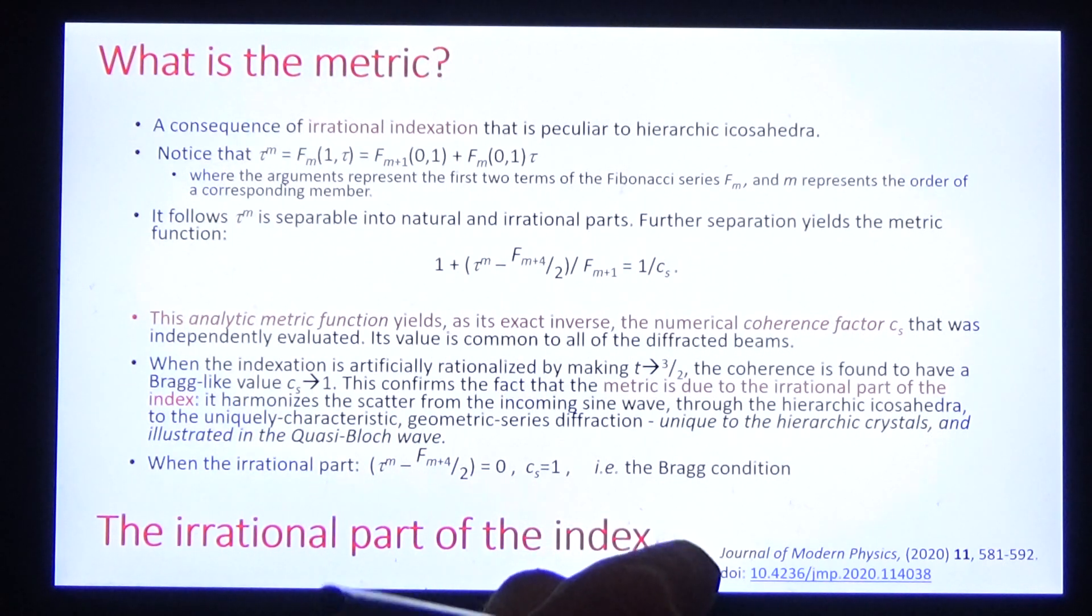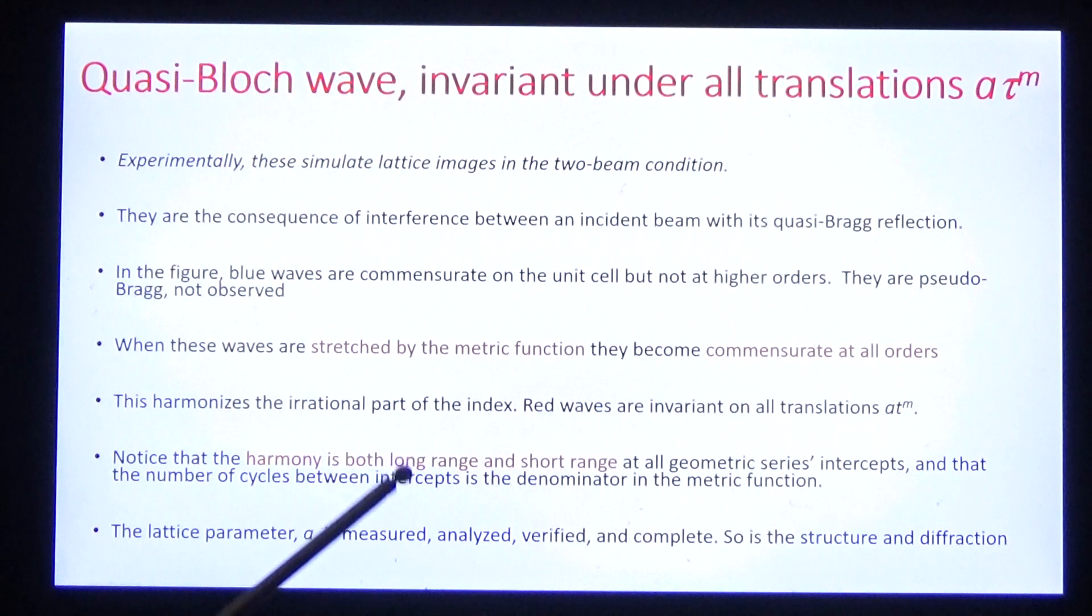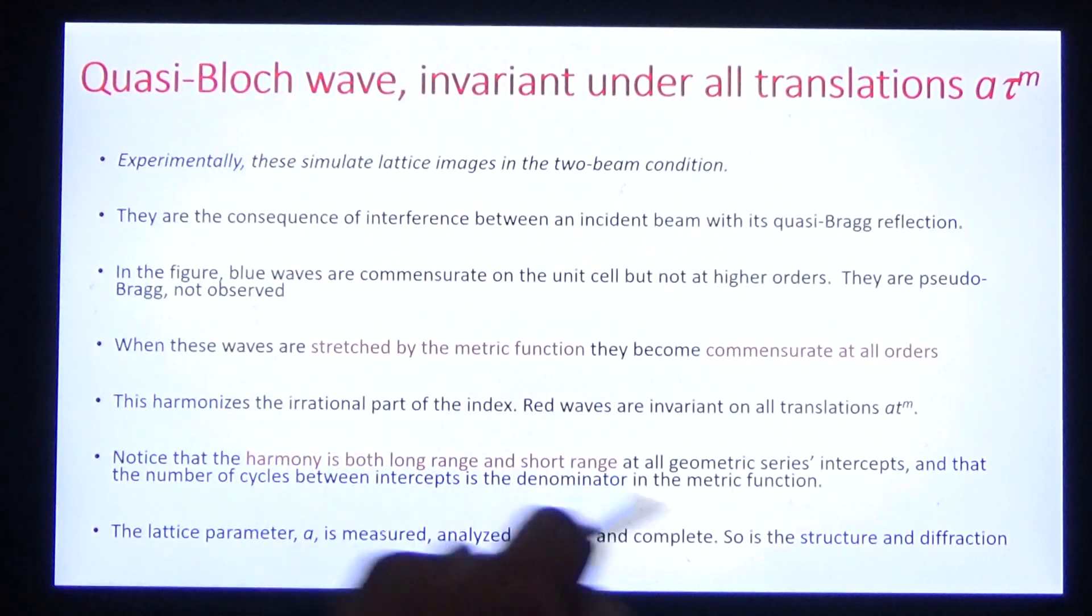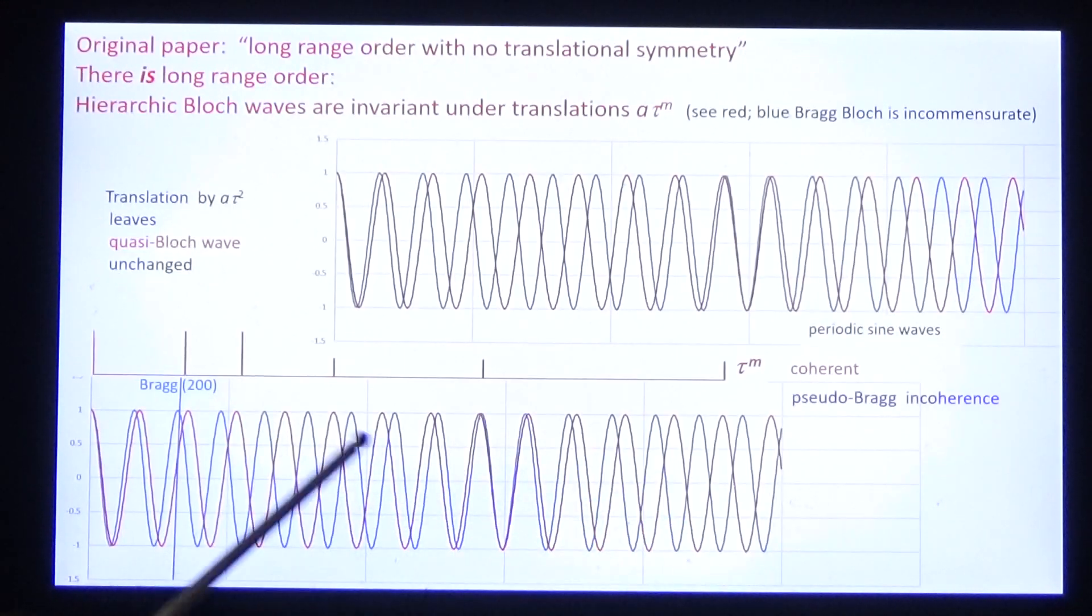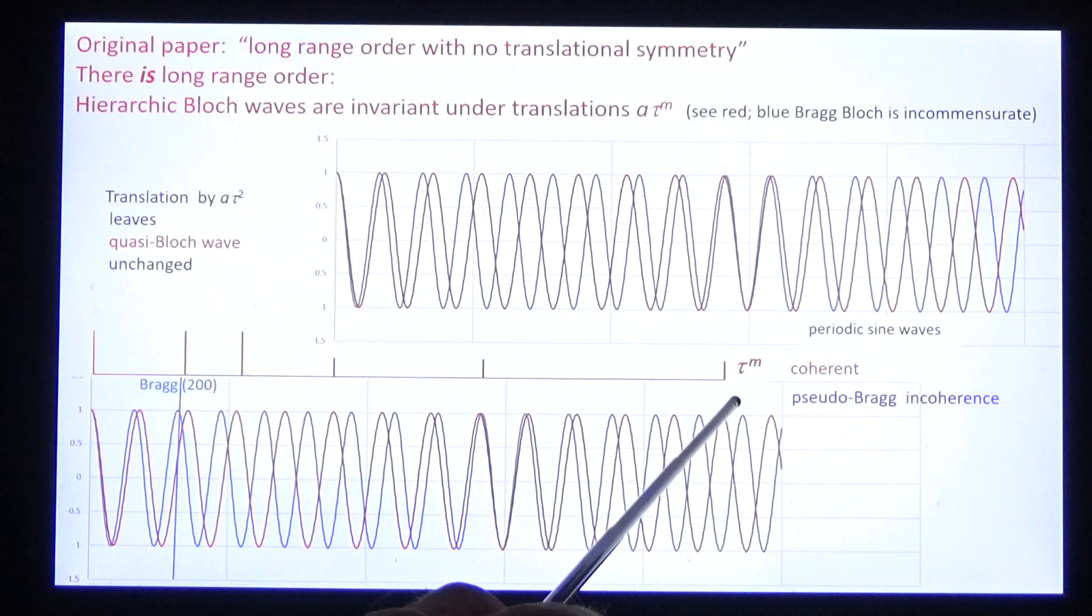Let's see how that pans out. It pans out in the quasi-Bloch wave. What is the quasi-Bloch wave? It's the lattice image in the two-beam condition. Look first at the blue pseudo-Bragg Bloch wave. It's commensurate at the unit cell, but not at higher orders. And so it's not observed. It doesn't diffract.